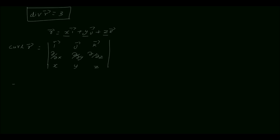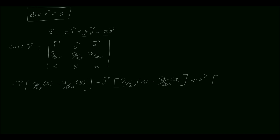Now we will expand this, which is equal to i vector into dou by dou y of z minus dou by dou z of y, minus j vector into dou by dou x of z minus dou by dou z of x, plus k vector into dou by dou x of y minus dou by dou y of x.